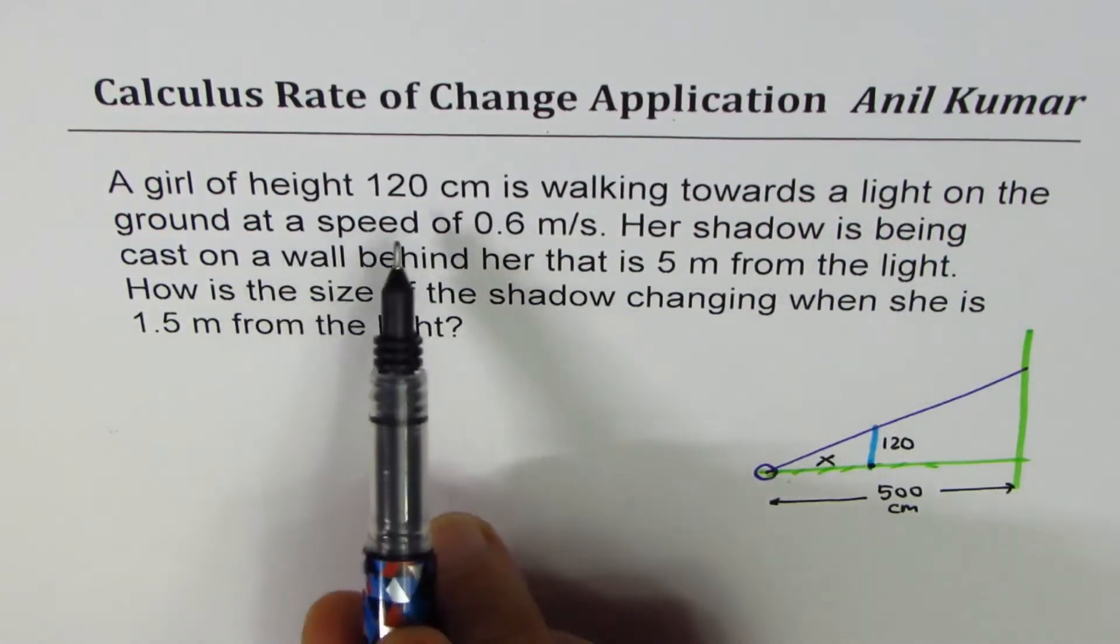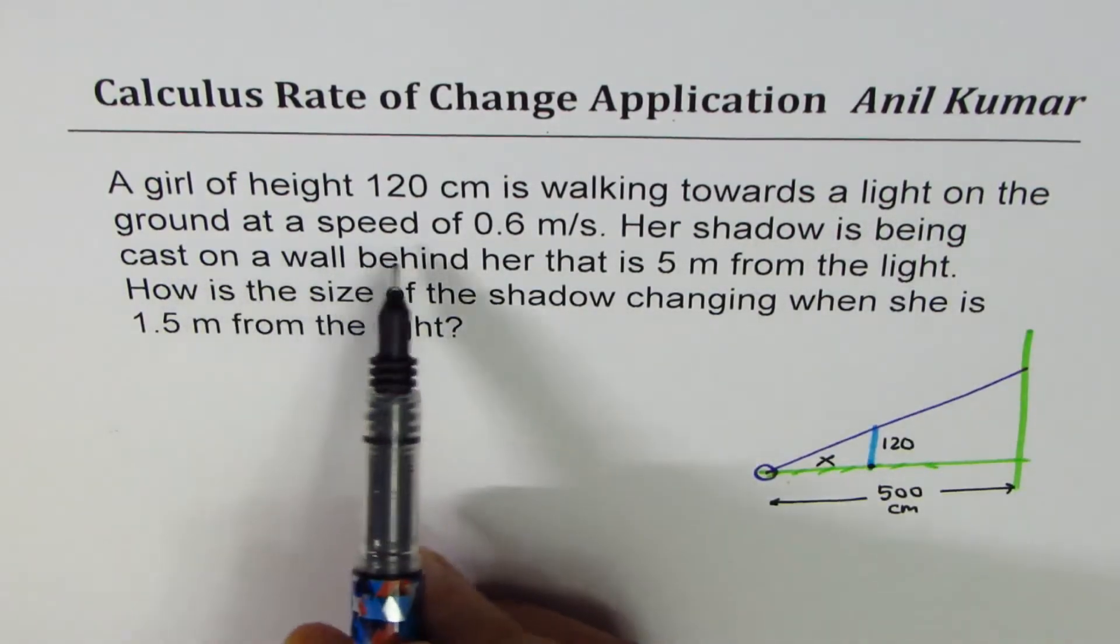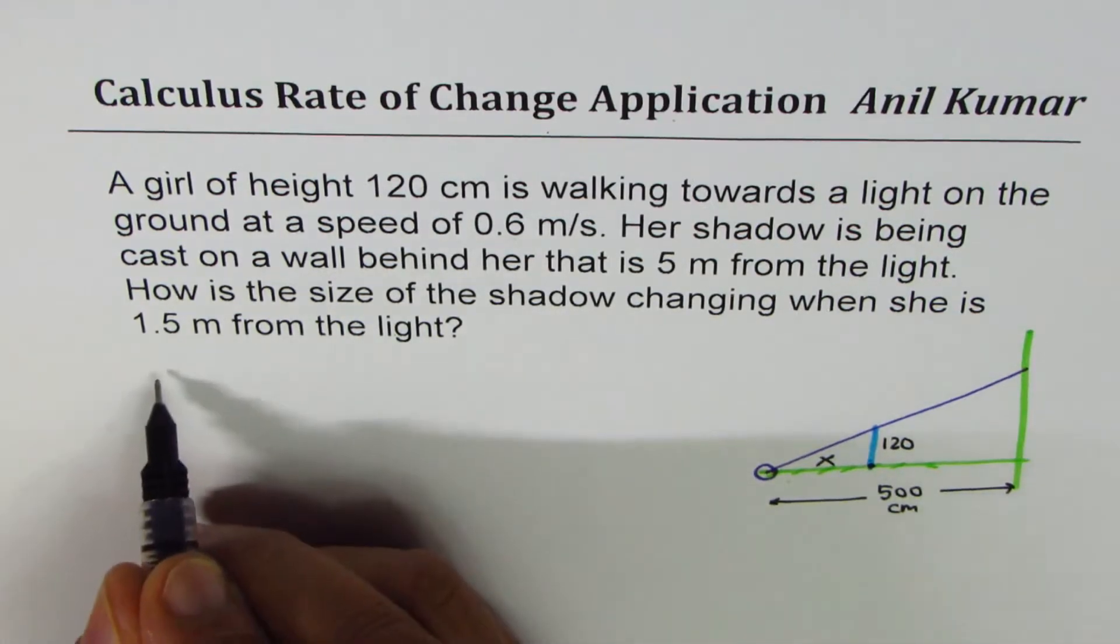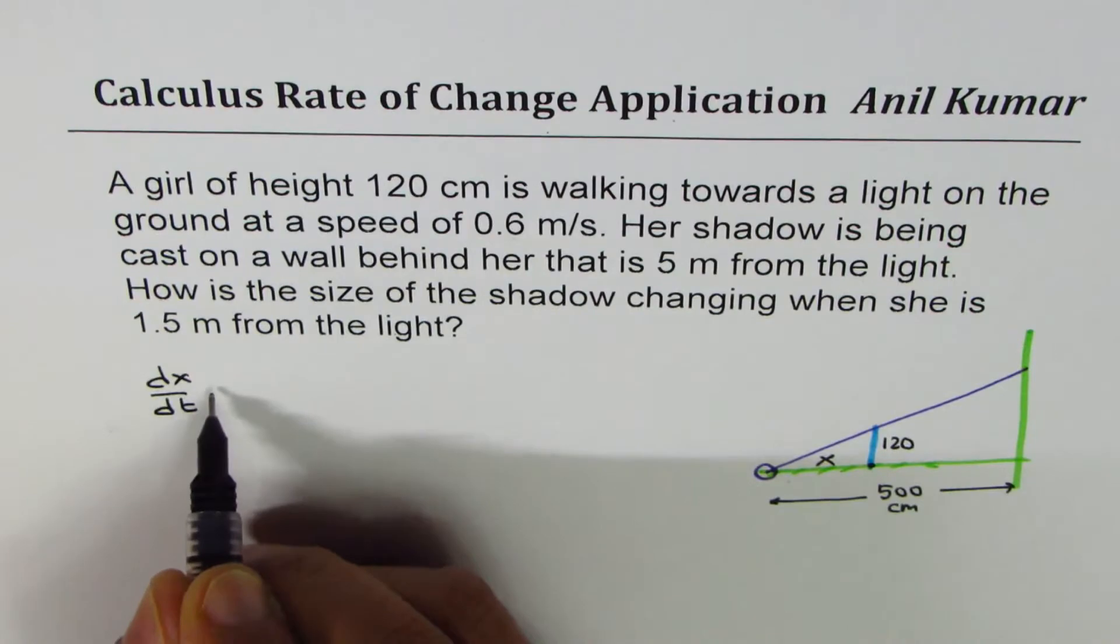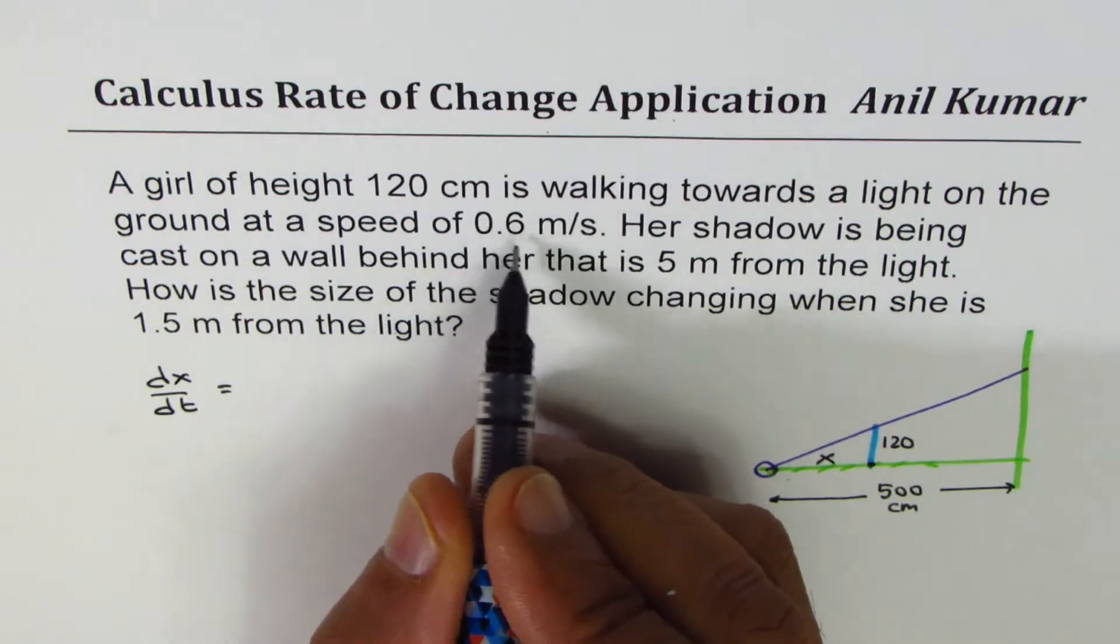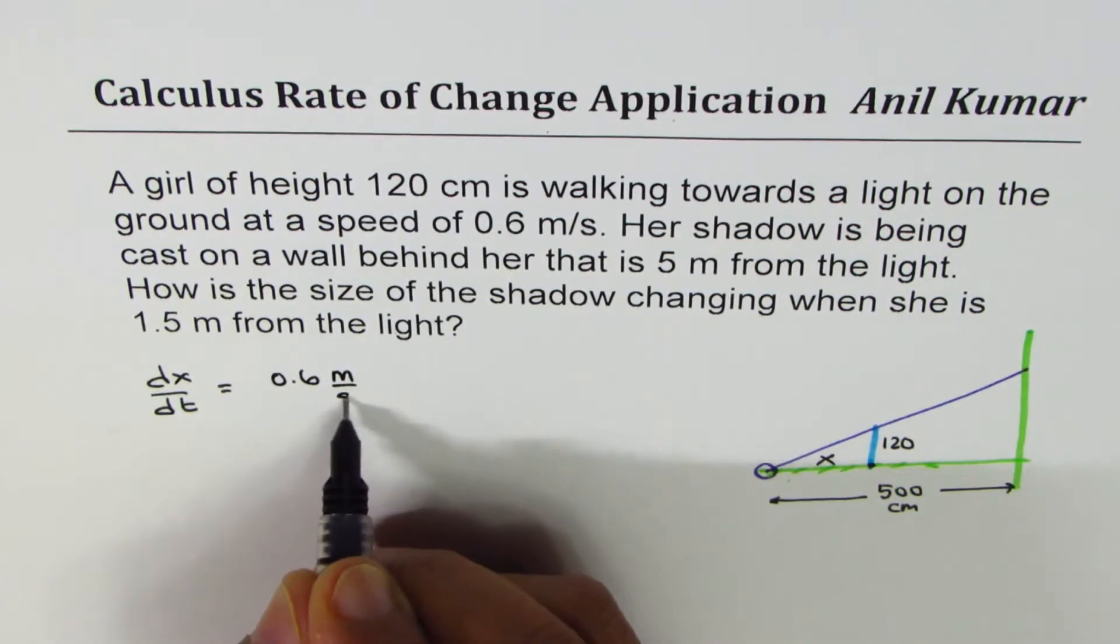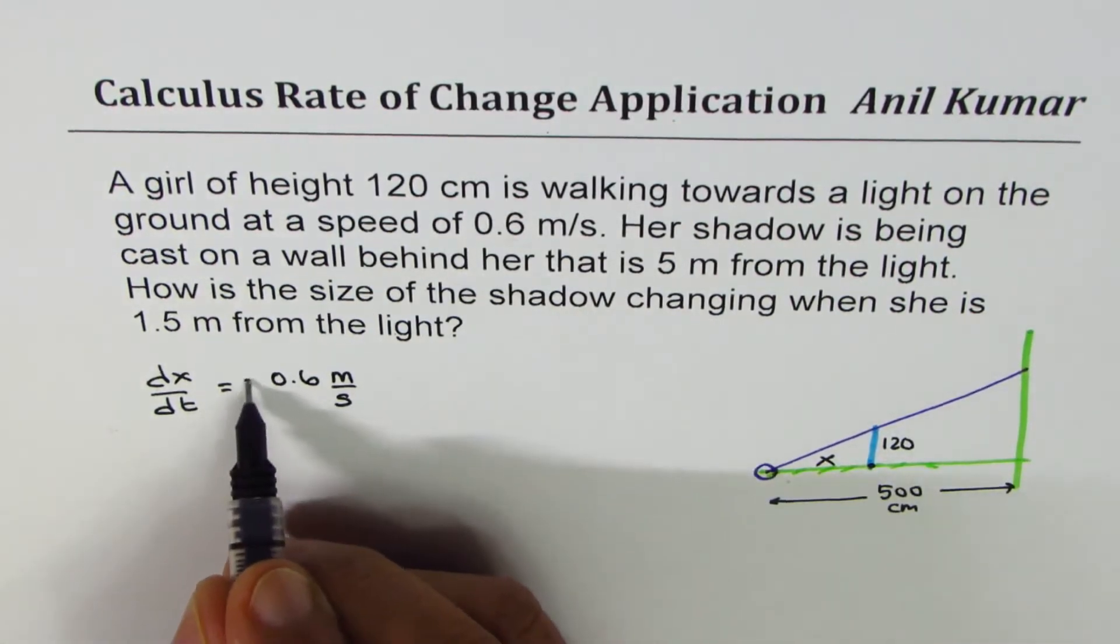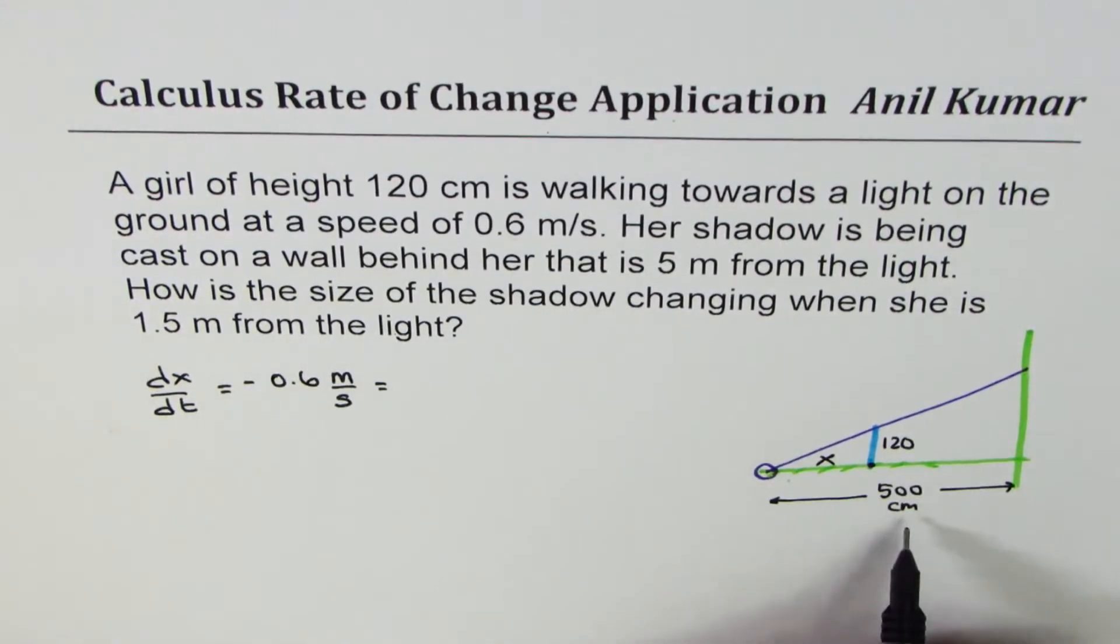A girl of height 120 cm walking towards a light on the ground at a speed of, so that is rate of change of x. So we can say dx/dt, that is the speed. Is equal to 0.6 meters per second. Now, since the distance is decreasing as the girl walks towards light, we should take this as a negative value.